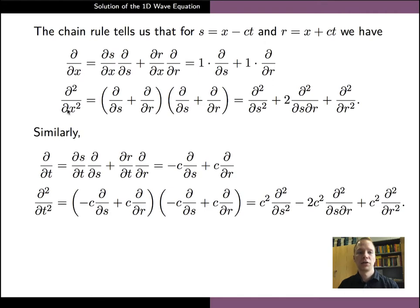The second order derivative with respect to x can be obtained by applying the first order derivative twice. Similarly, we can express the partial derivatives with respect to t in terms of the partial derivatives with respect to s and r. The only difference is that the derivatives of s and r with respect to t depend on the wave speed c, and because of this, the constant appears in the final formula as well.